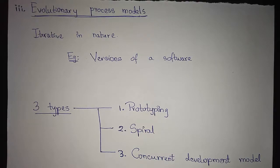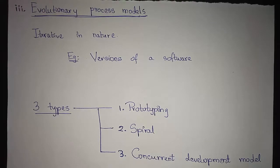Just like that, we release the first primary version of software and then we generally evaluate each version. It is of three types: prototyping, spiral, and concurrent development model. Let's go with the prototyping model.